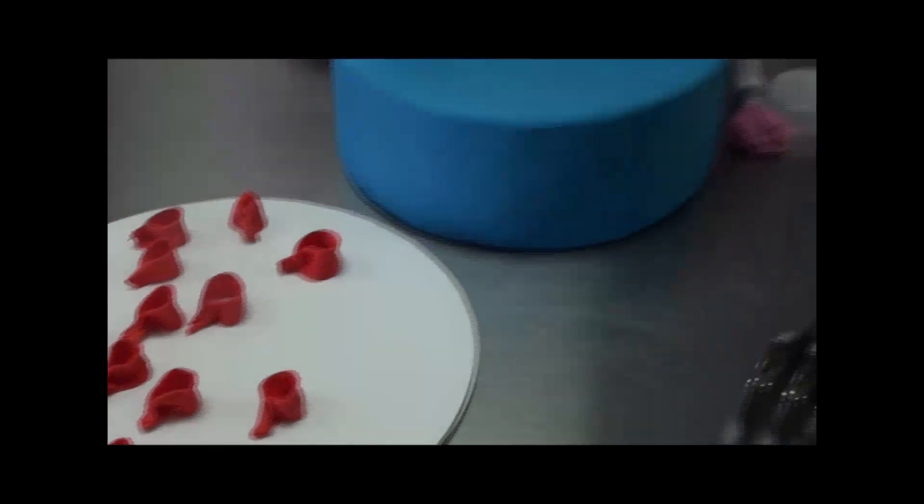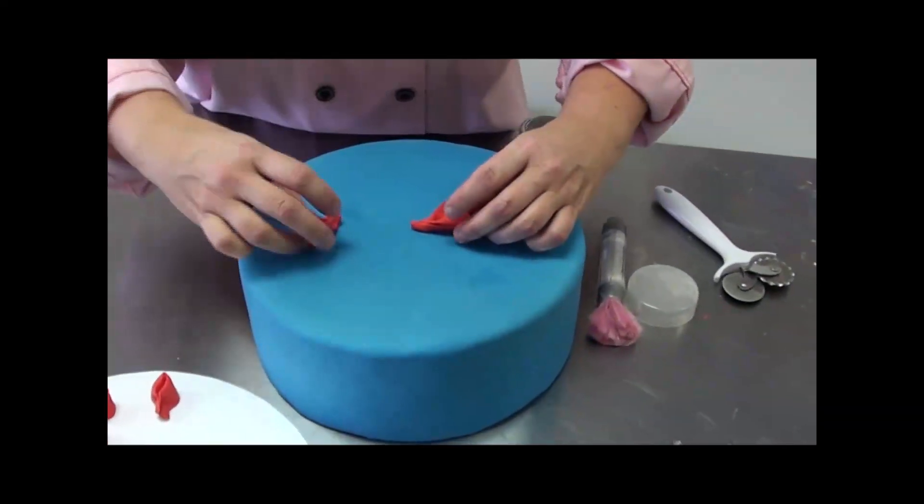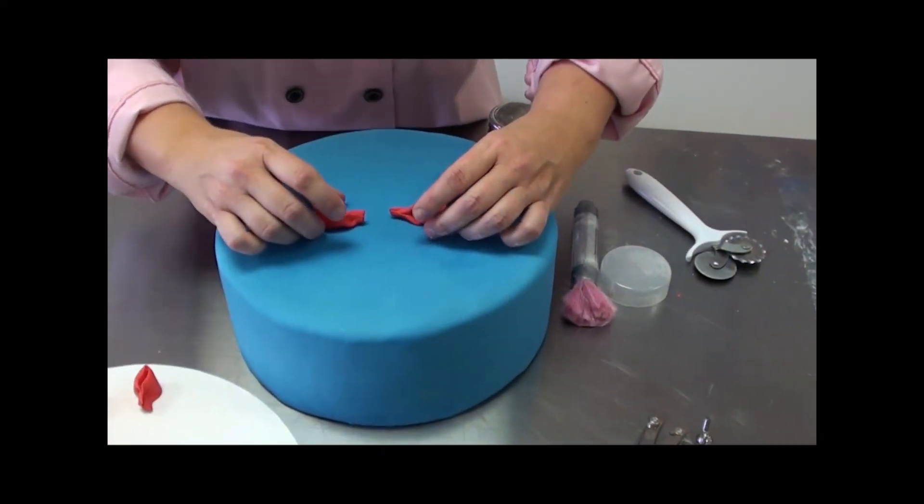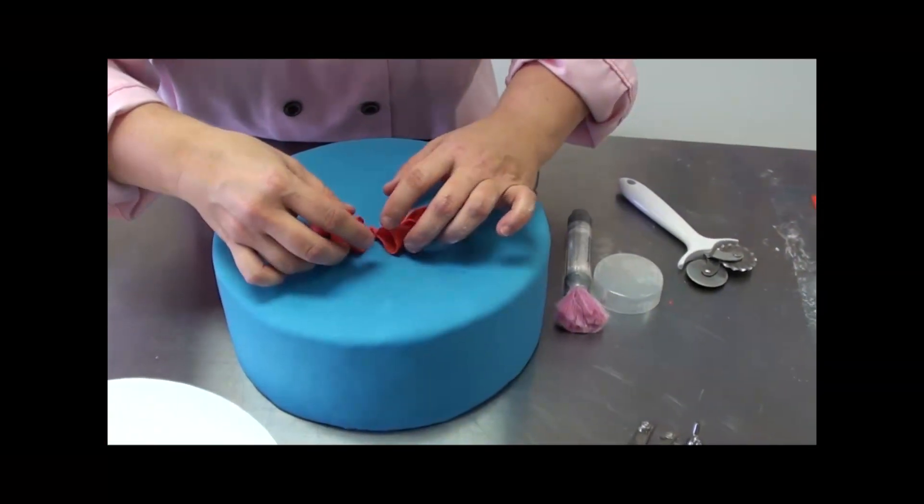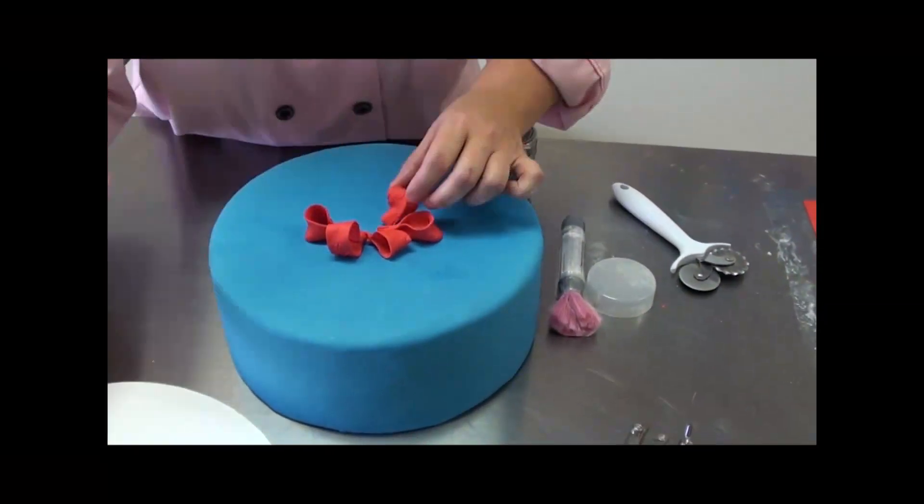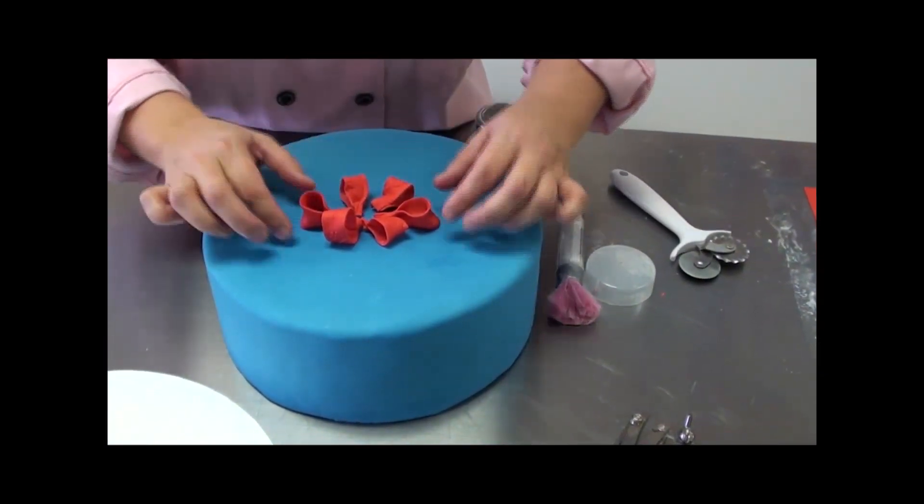So here's what we're going to do. We're going to start to make our bow. What I like to do is set six loops on the cake. Two, three, four, five, six. Now what I'm going to do is arrange these so they're evenly spaced.